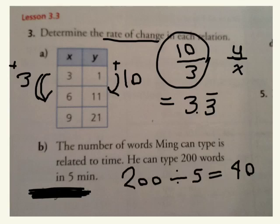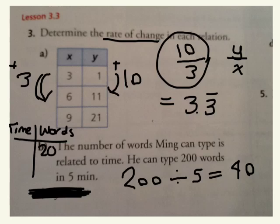What about b? For the second question, if we were to put this in a table, we're looking at minutes, right? Time and words typed. So if he types 200 words in 5 minutes, 200 divided by 5, which is 40 words per minute.